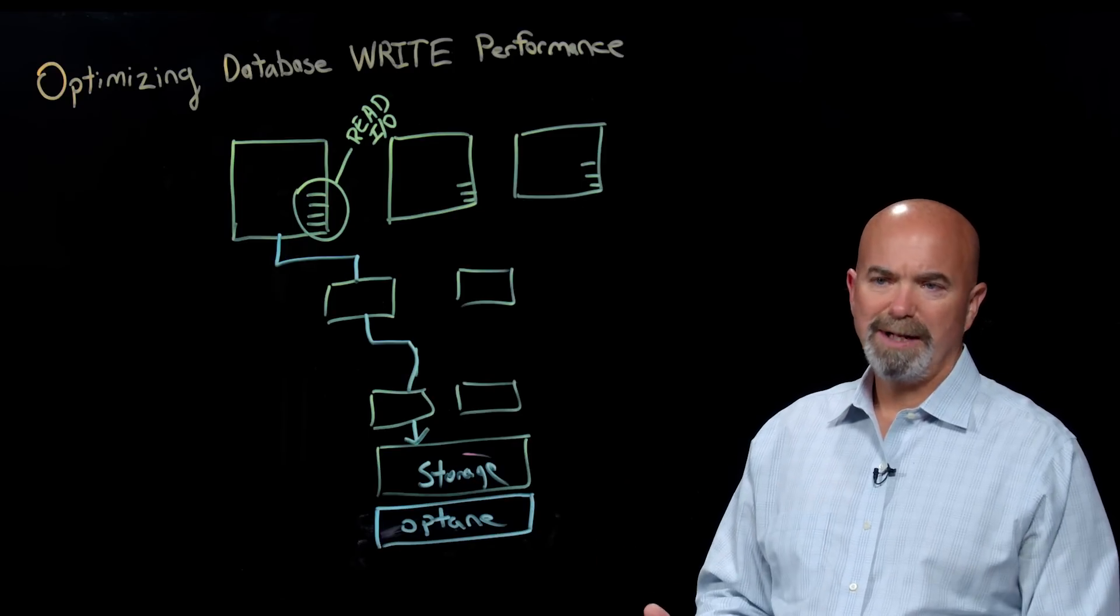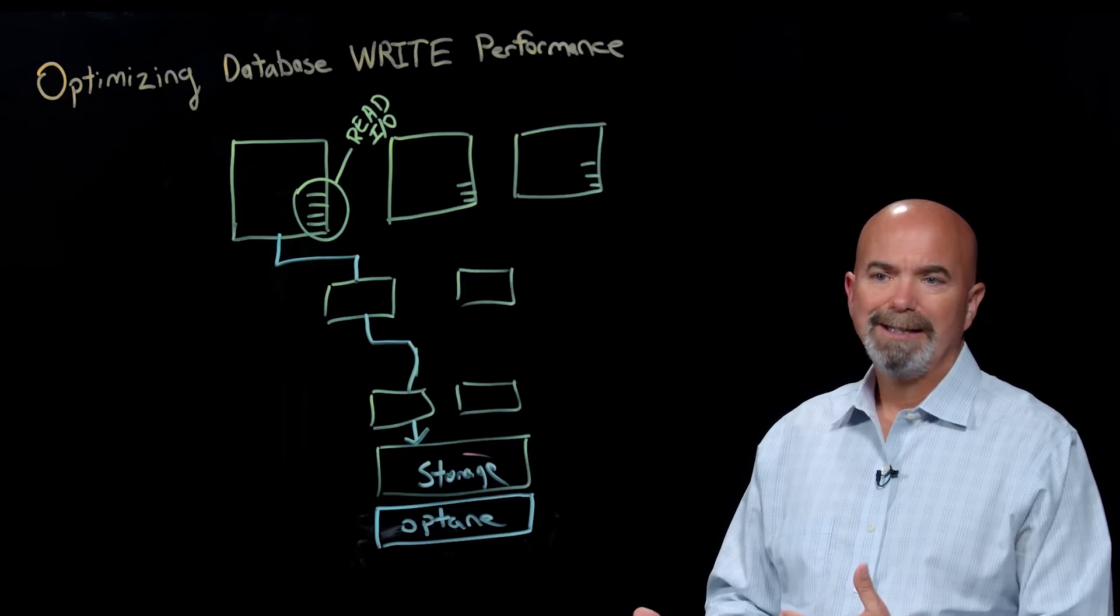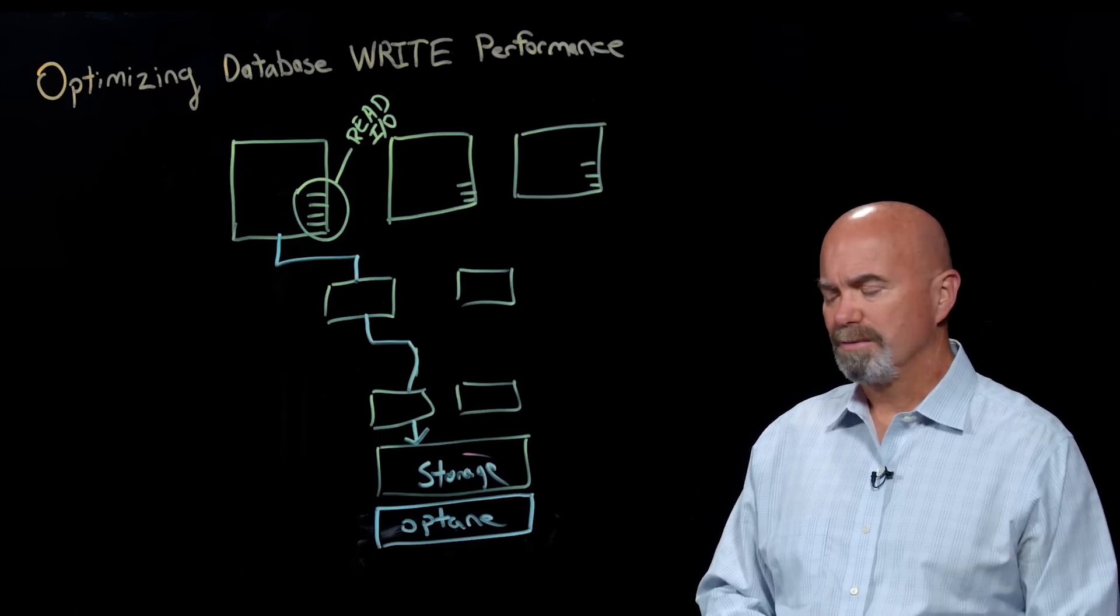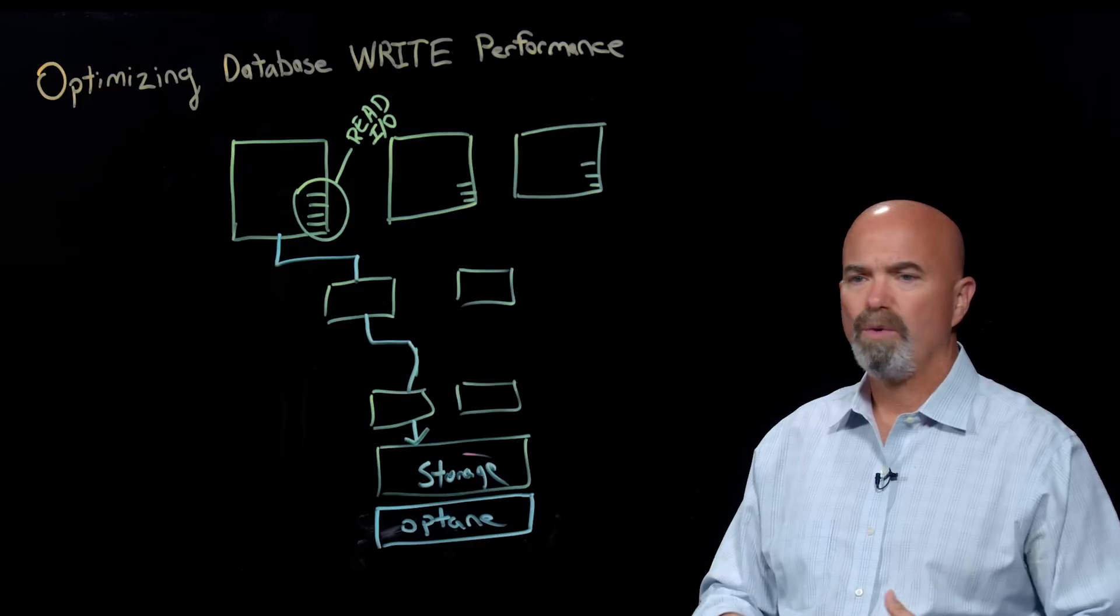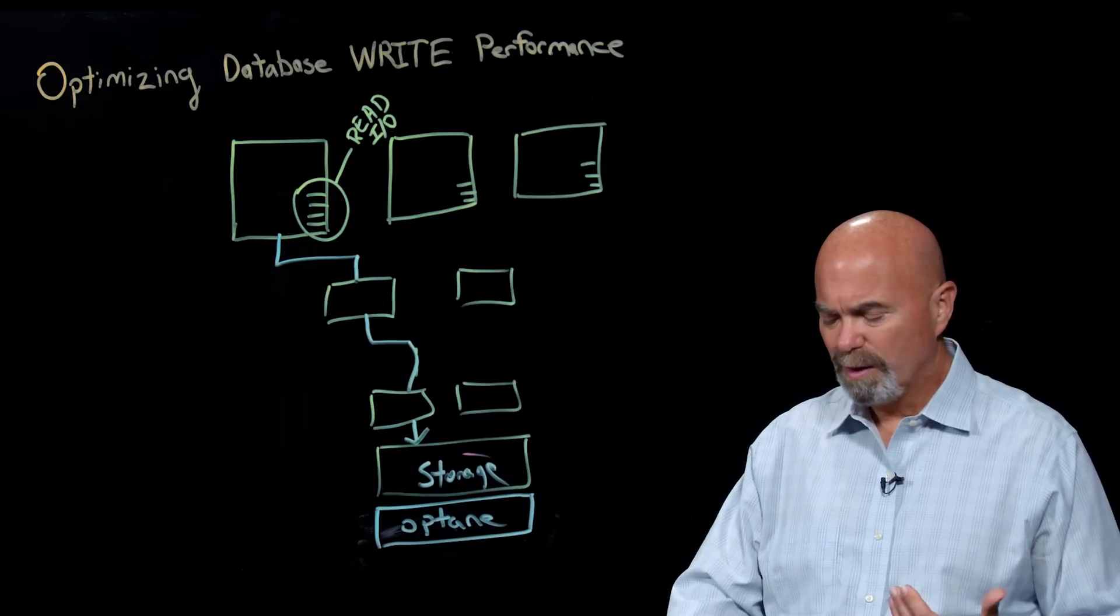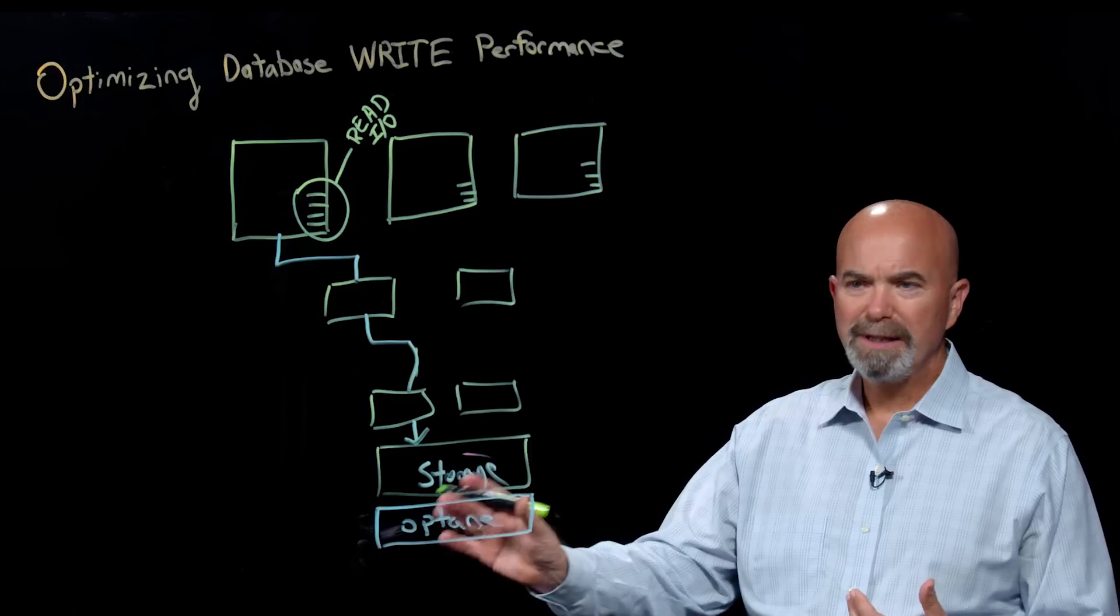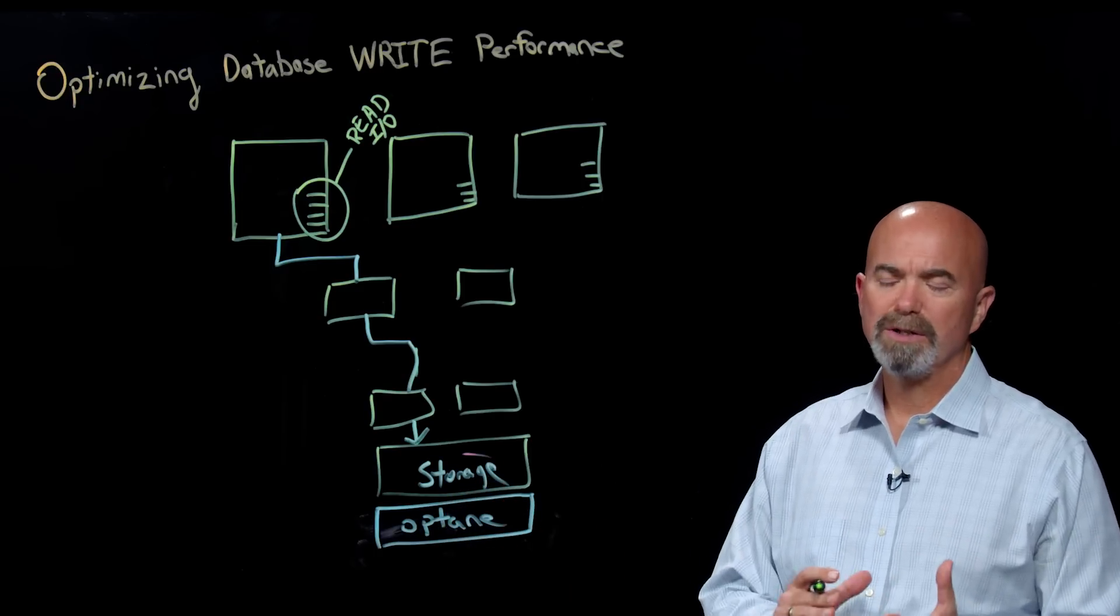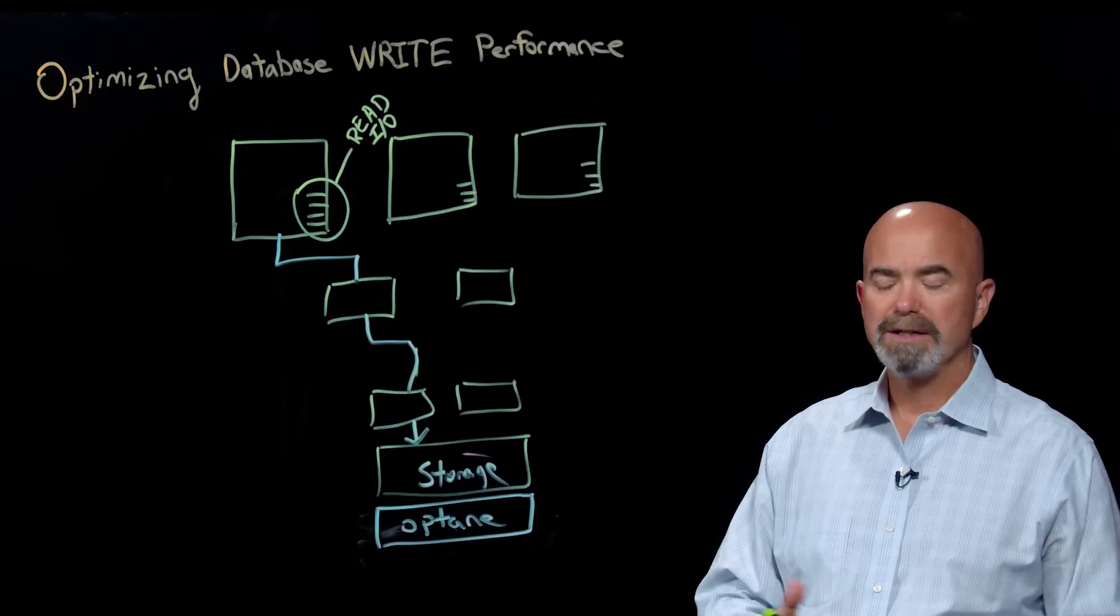Now the challenge with Optane is it's also much more expensive per gigabyte than all Flash systems are. And so you can't really, today anyways, build a storage system that's 100% Optane based. And so what has happened on the market is vendors that have tried to implement Optane typically use Optane as a cache, which means they can only typically use it read-only, which again means you don't get the write performance advantages of it.